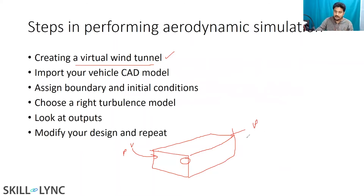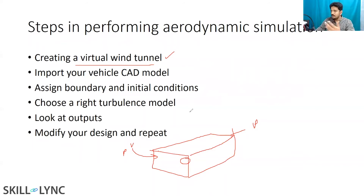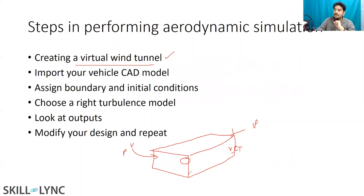The CFD solver then solves the computational fluid dynamics equations. When you solve these equations, you can get the velocity, pressure, and temperature at each and every point specified in your computational domain. Those points are what you call your computational mesh.